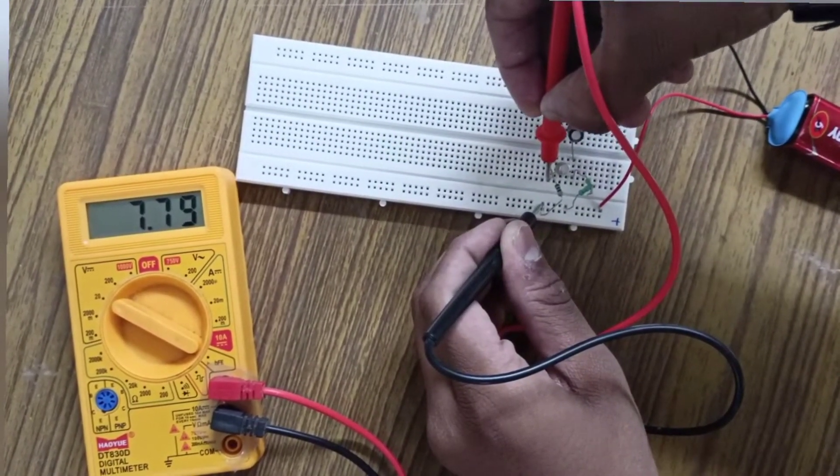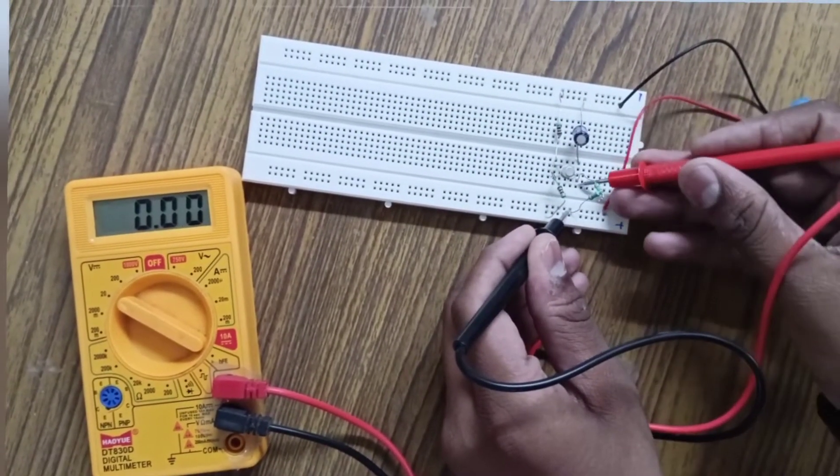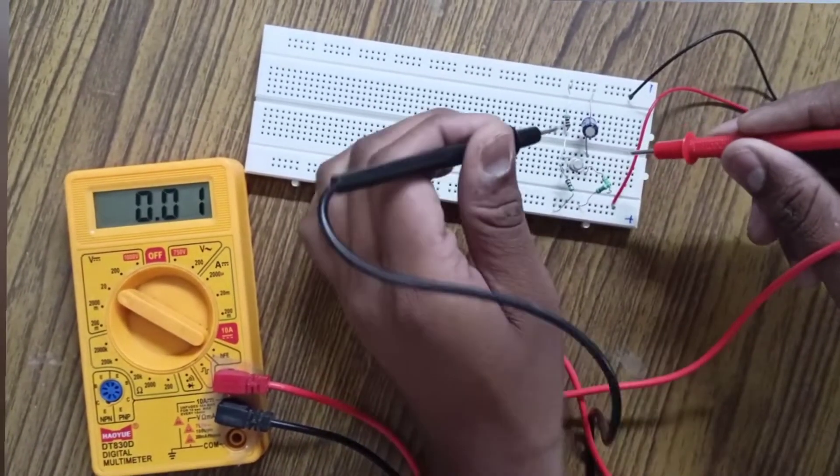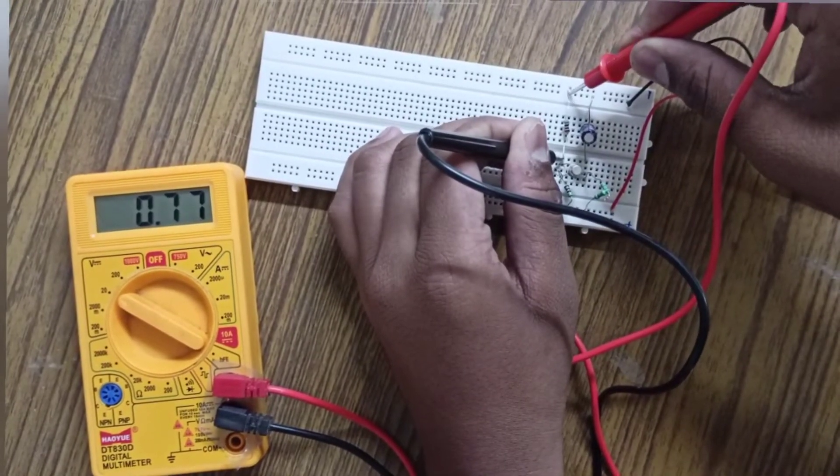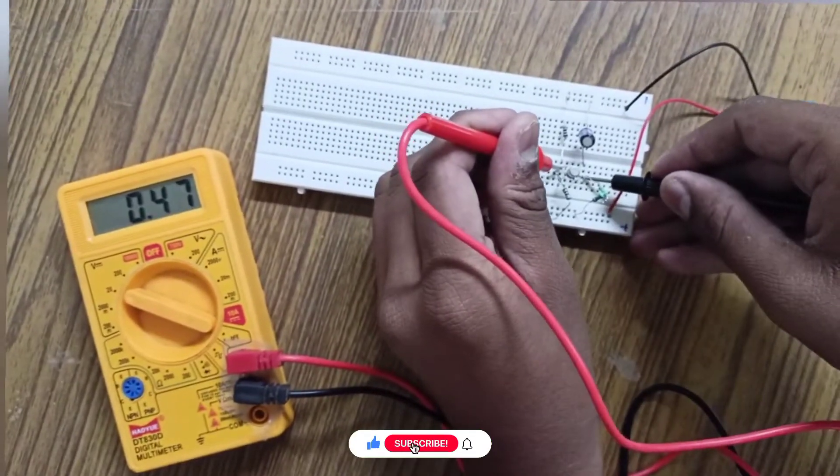We measure the voltage across the 10 kilo ohm and 470 kilo ohm resistor and it is 7.26 volts. Then we measure voltage across the 27 ohm resistor and it is 0.77 volts. We measure voltage across the UJT.